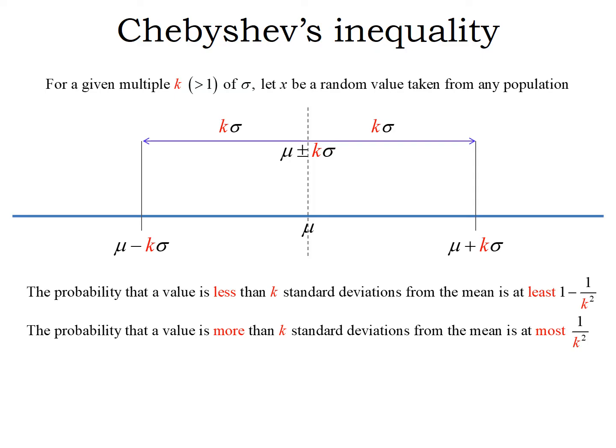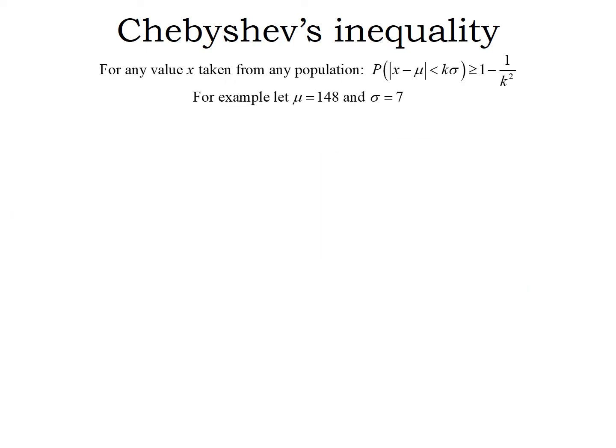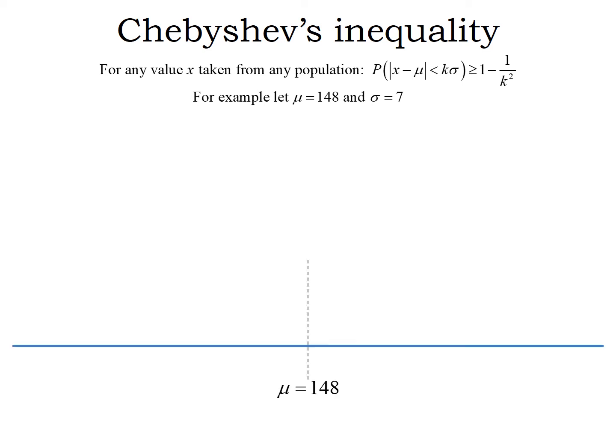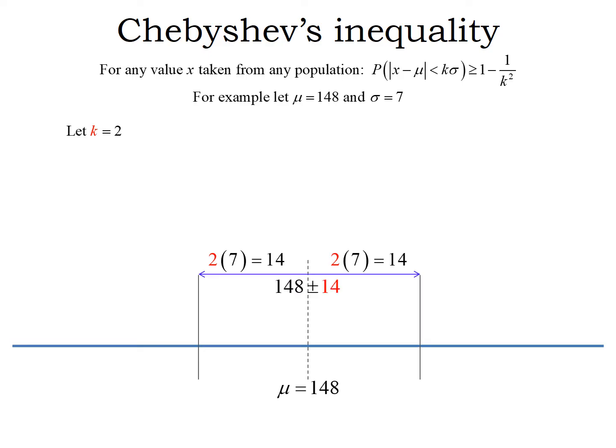Now let's look at a numerical example. For our first example, we're going to let mu be 148 and sigma be 7. The mean is 148, the standard deviation is 7. I have my center point of the population at 148, and I'm going to let K be 2. So we're interested in two standard deviations from the mean. Two standard deviations is going to be 14, because sigma is 7, and 2 times 7 is 14. If we go 14 above and below the mean — 148 plus or minus 14 — that puts us at 162 and 134. So 134 and 162 are exactly two standard deviations away from the mean.